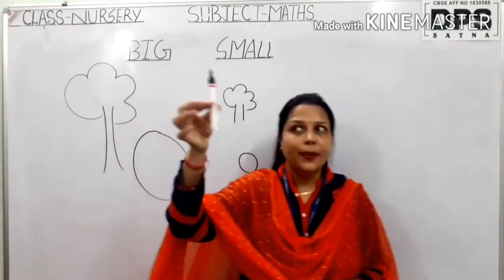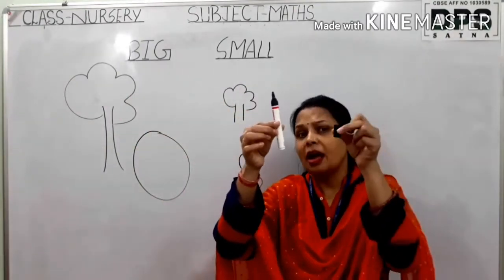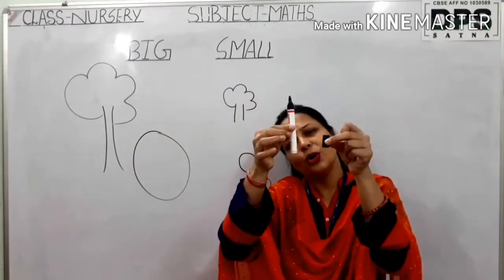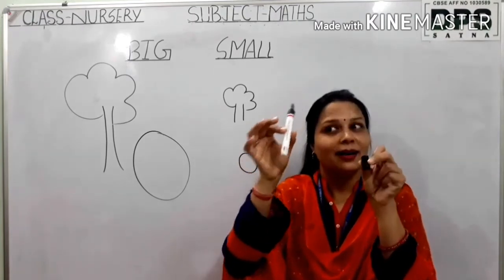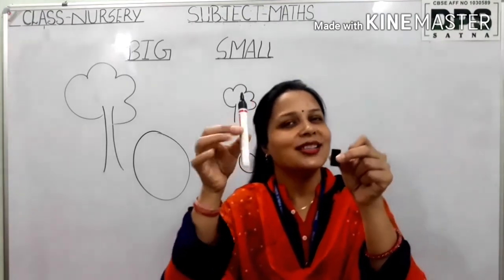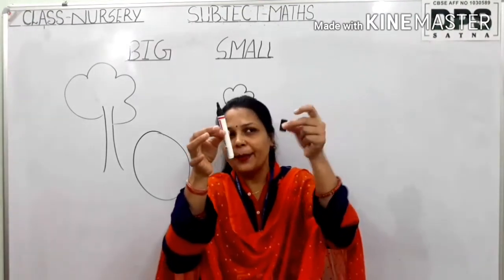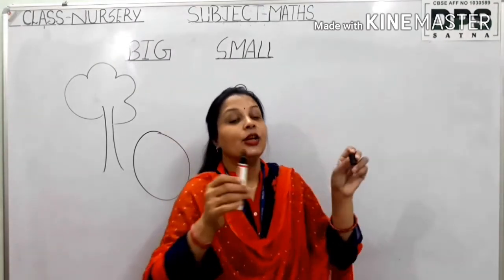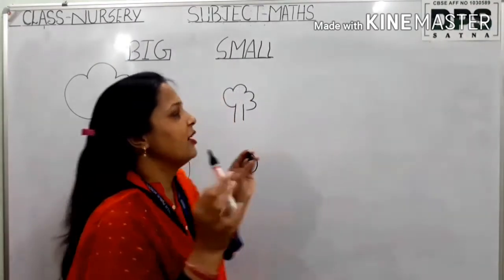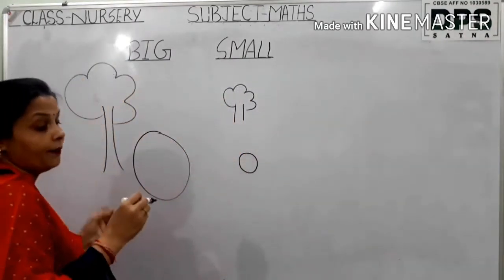Look here. This pen is big, but its cap is small. So this is our marker — how is it? It's big. But how is its cap? Small. Yes. So this is the difference between big and small.